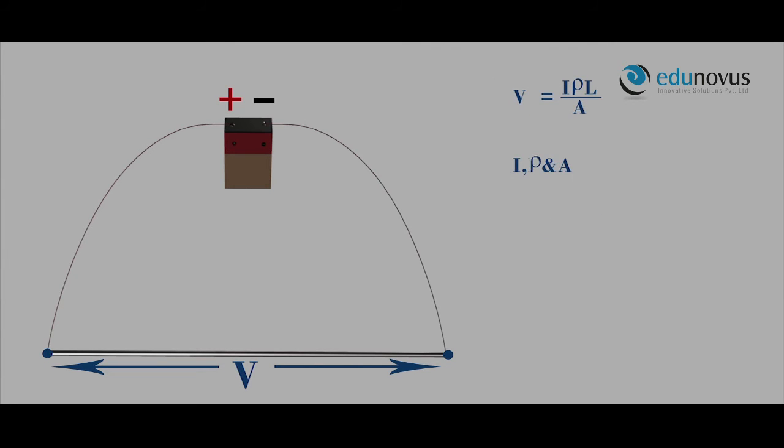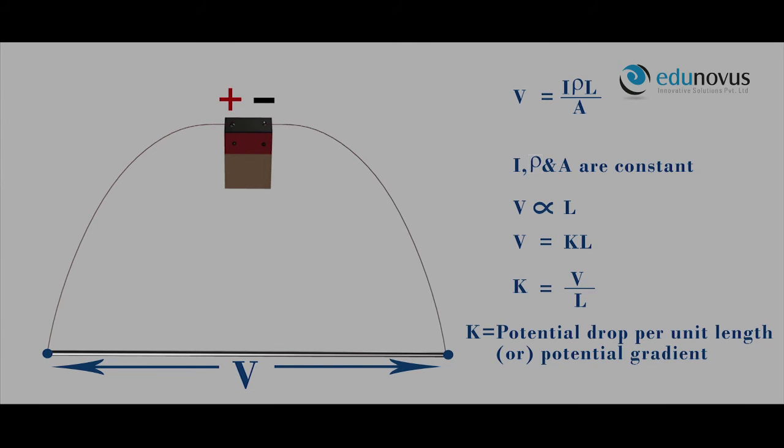If I, ρ, and A are made constant, then the potential drop is directly proportional to the length of the wire. V is proportional to L, so V equals KL, where K equals V/L. K is the potential drop per unit length or potential gradient.